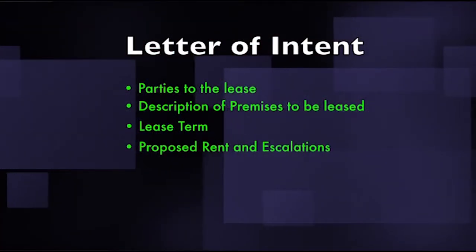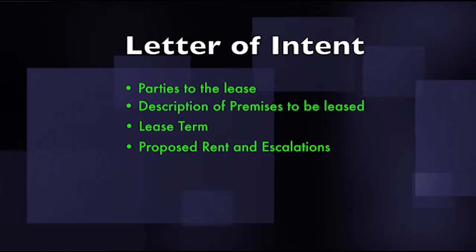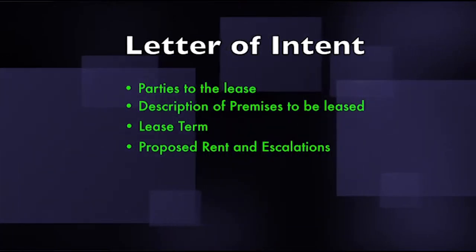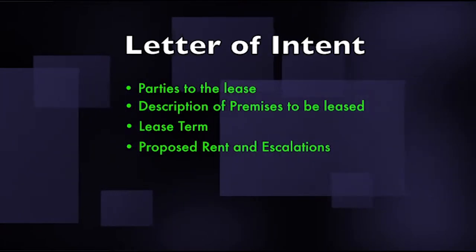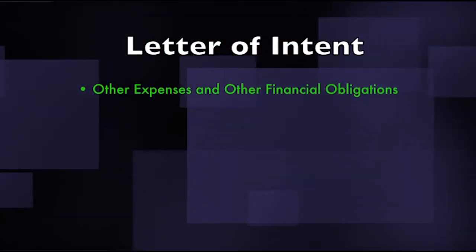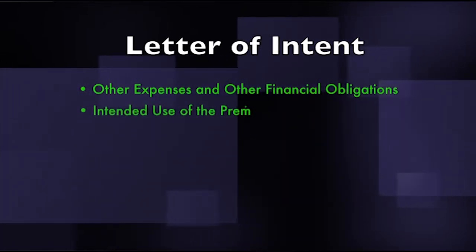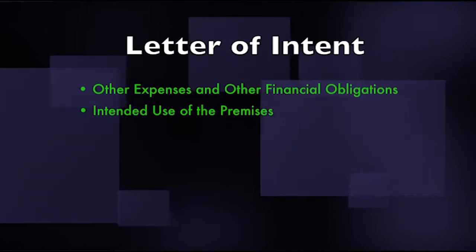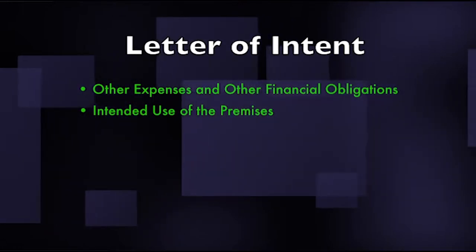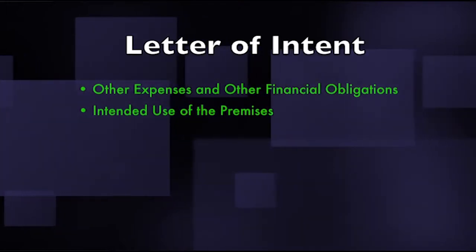The LOI should also include: proposed rent and escalations — the type of lease (gross, net, triple net, or percentage), proposed rental payments on a gross or per-square-foot basis, and an outline of proposed escalations during the term; other expenses and financial obligations — what expenses landlord and tenant are each responsible to pay; and the intended use of the premises, which is significant because retail properties often have restrictions on tenant categories such as food service, and industrial owners may need to consider environmental issues with different prospective tenants.